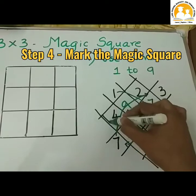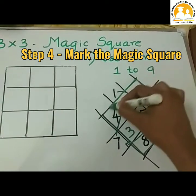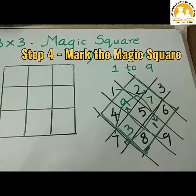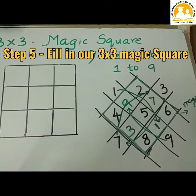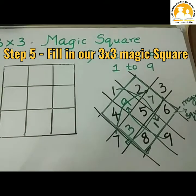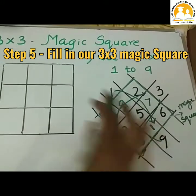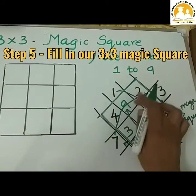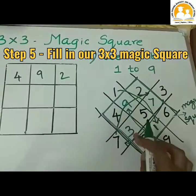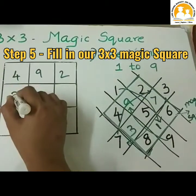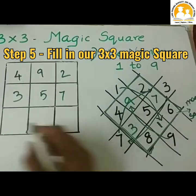Step 4 is to mark the magic square. Fill up the magic square. The numbers are: 4, 9, 2 in the first row; 3, 5, 7 in the second row; and 8, 1, 6 in the third row.